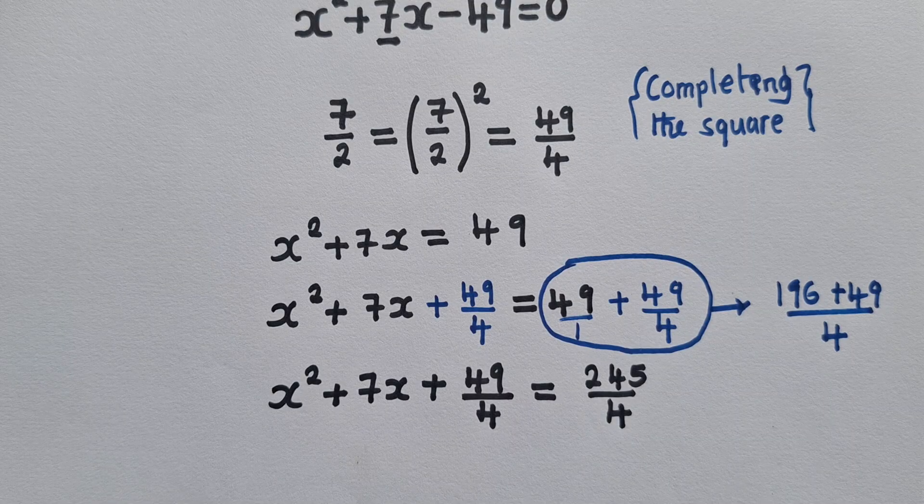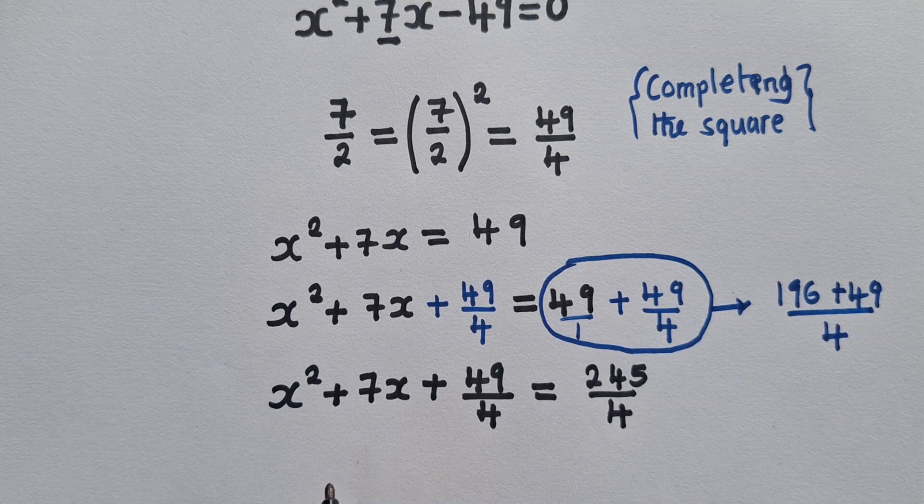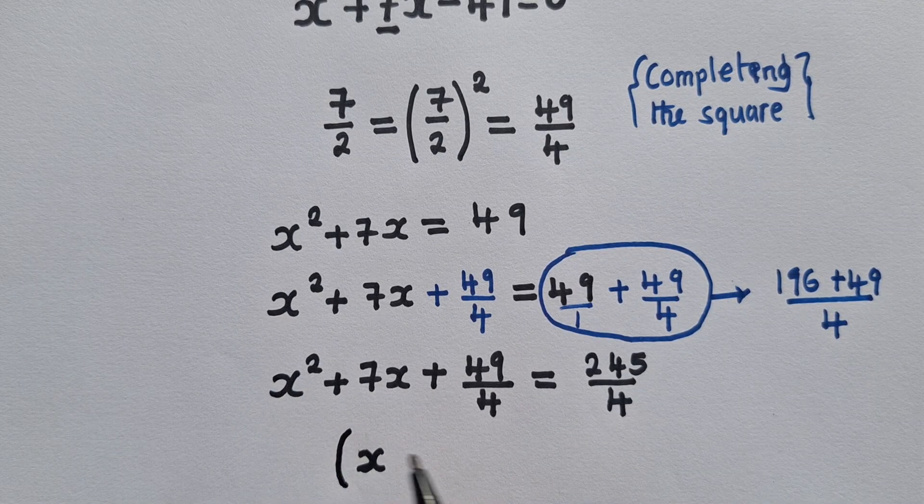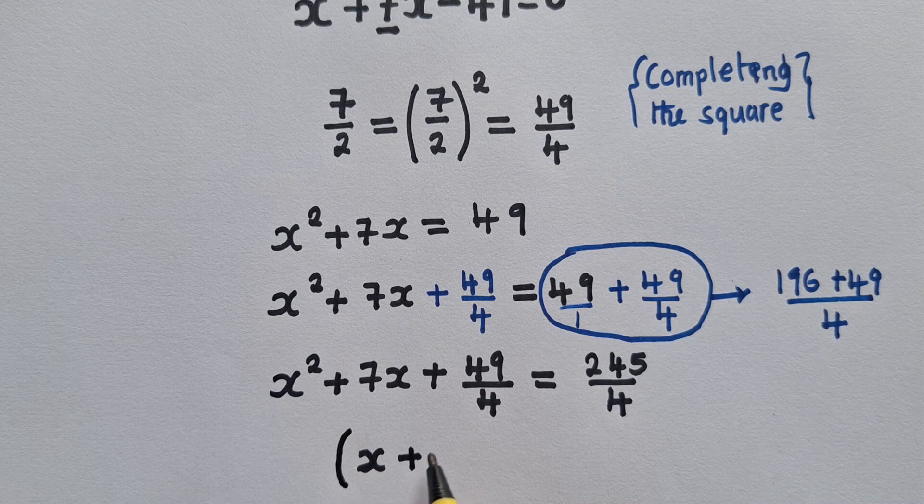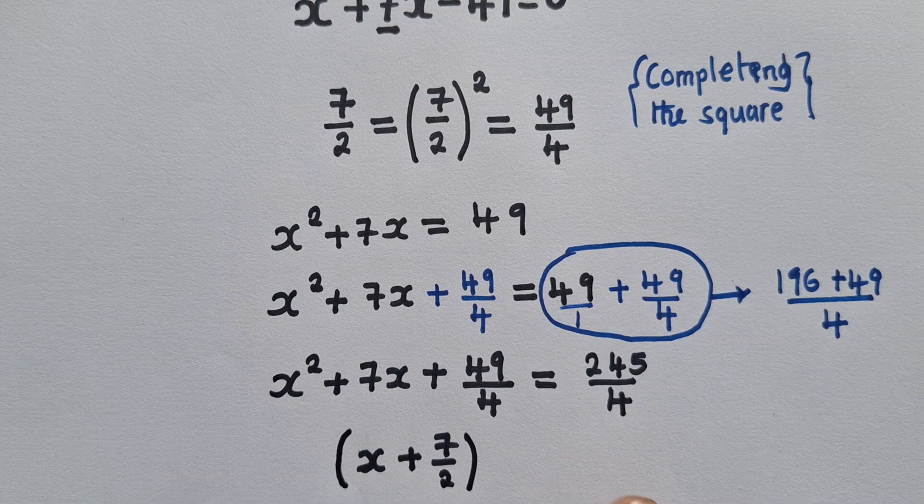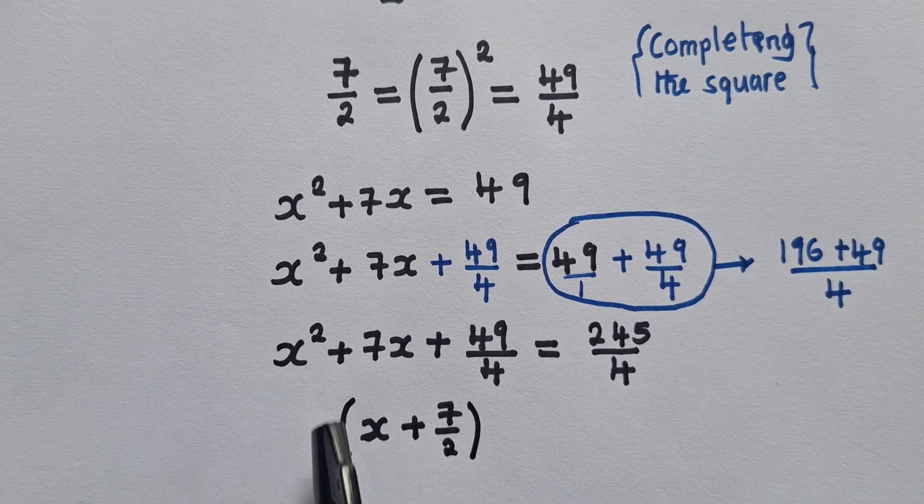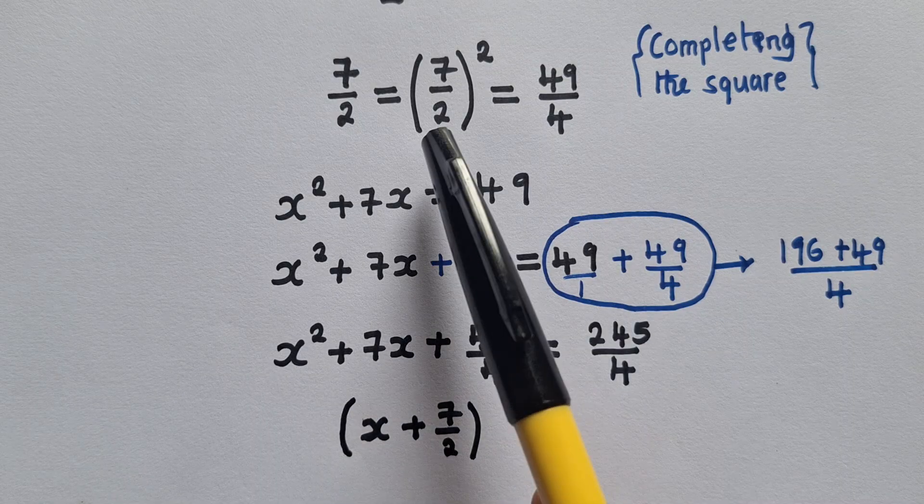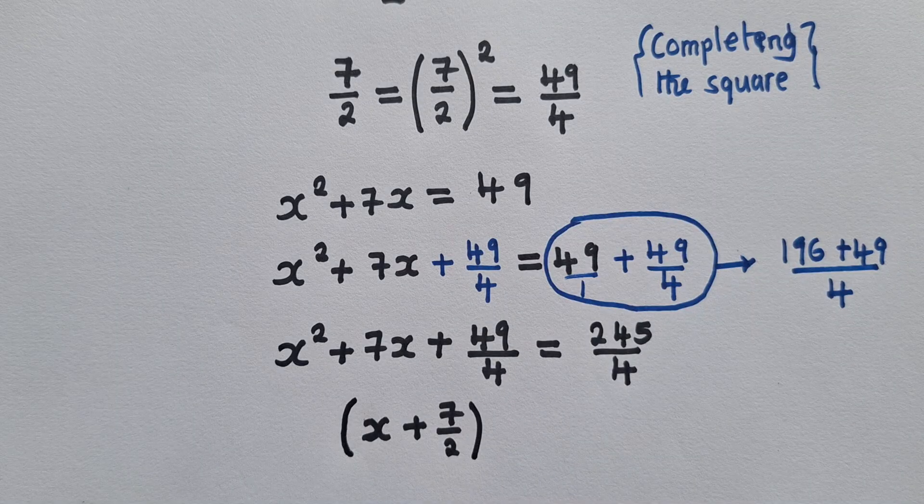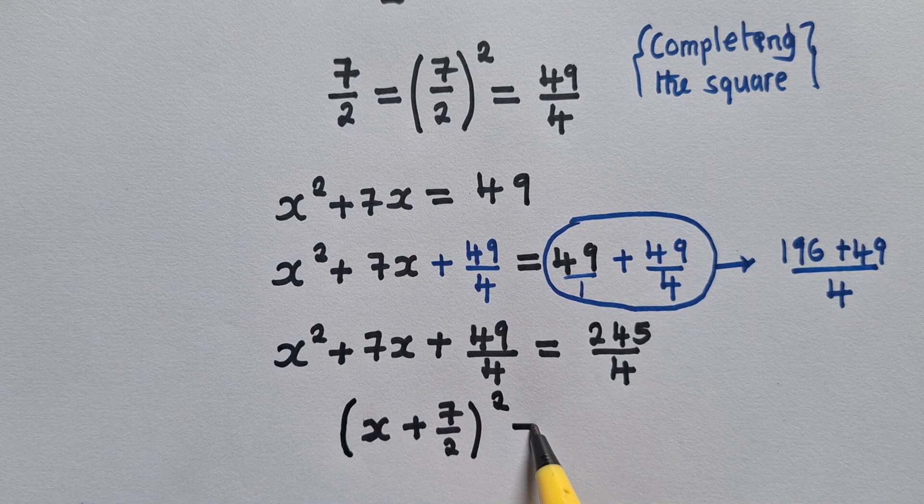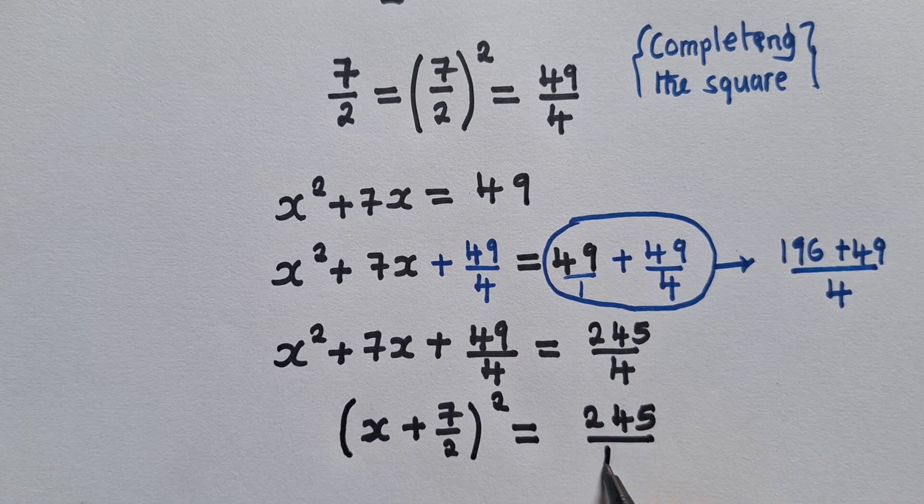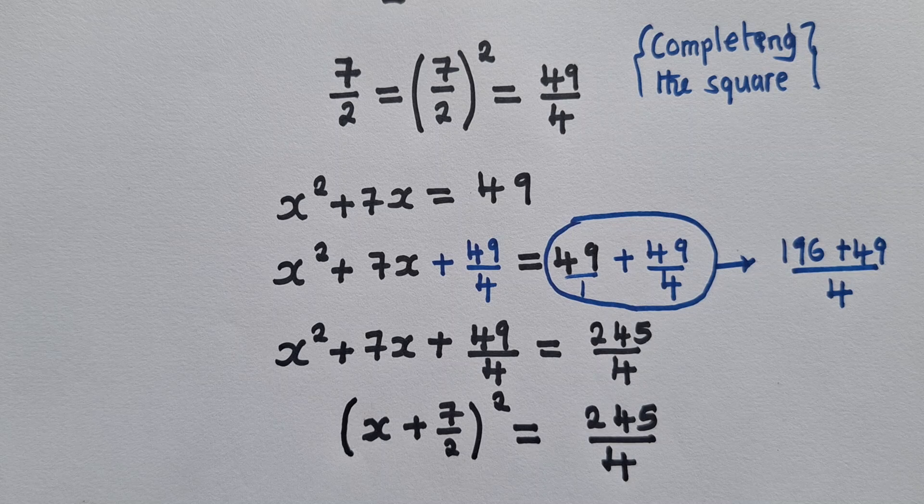And when you do that, you can now write this as a perfect square. So it will be like this: x plus 7/2. Remember this point. So when you reach at this point, you now say x, the variable that you're able to see, and then you get what is here, what is inside, right here. So that's 7/2. And then here you say power 2 is equal to 245/4.